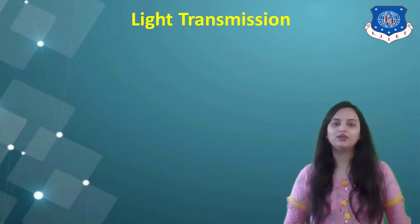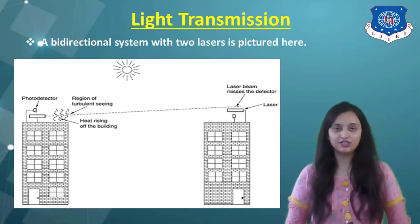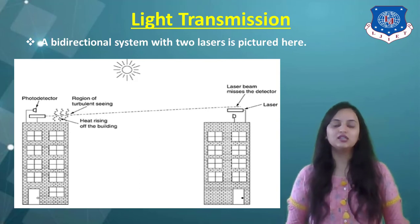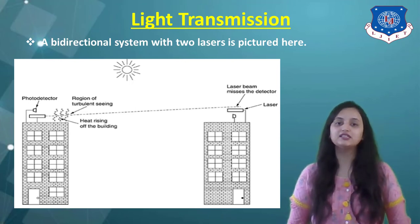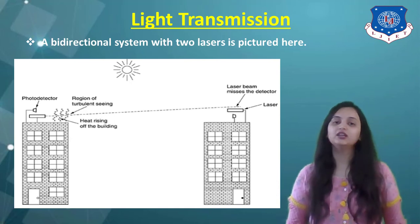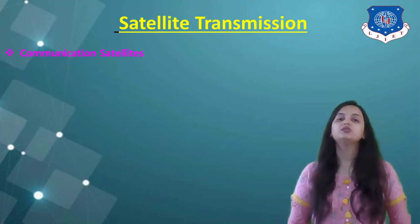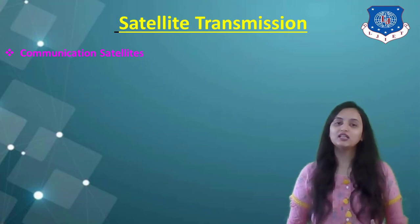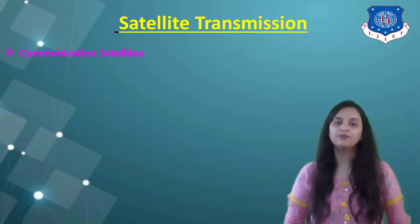Next is light transmission. A diagram shows a bidirectional system with two lasers. Two buildings are shown, and using light transmission, data can be transferred between them — the first building has a photodetector and the second has a laser beam directed at it. Next is satellite transmission, widely used nowadays using communication satellites. Data transmission takes place using different communication satellites outside the earth's surface.